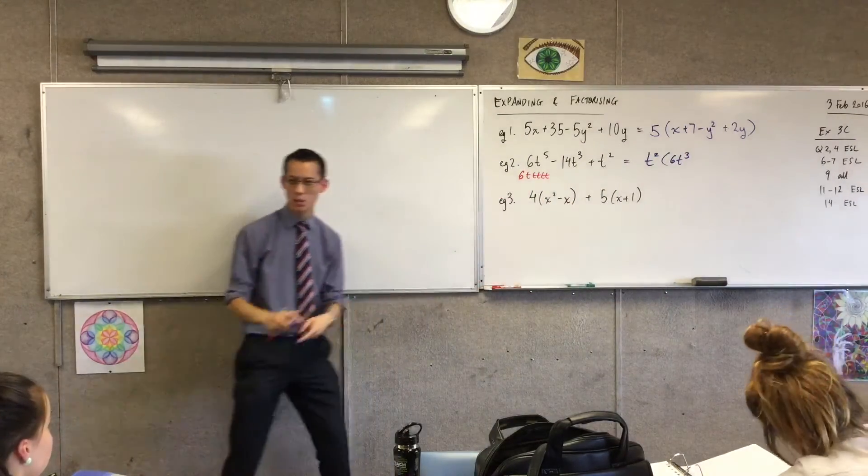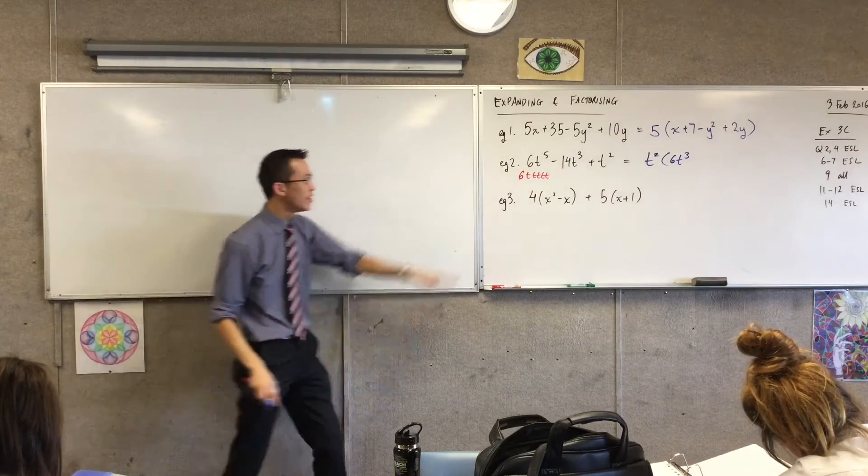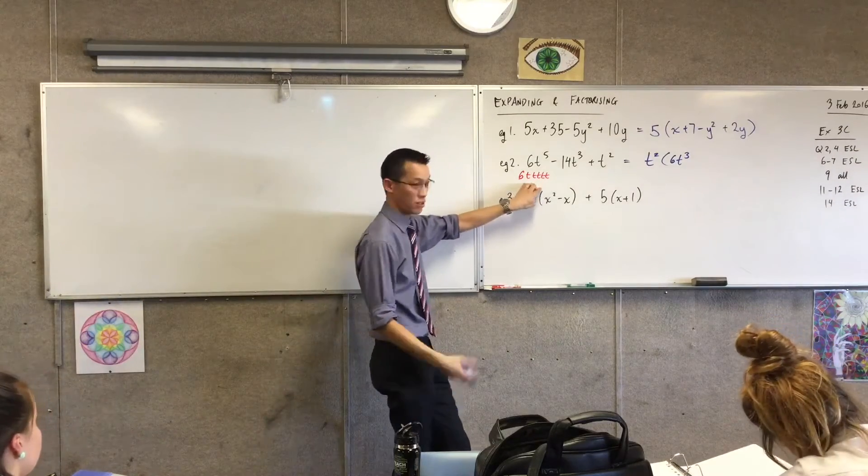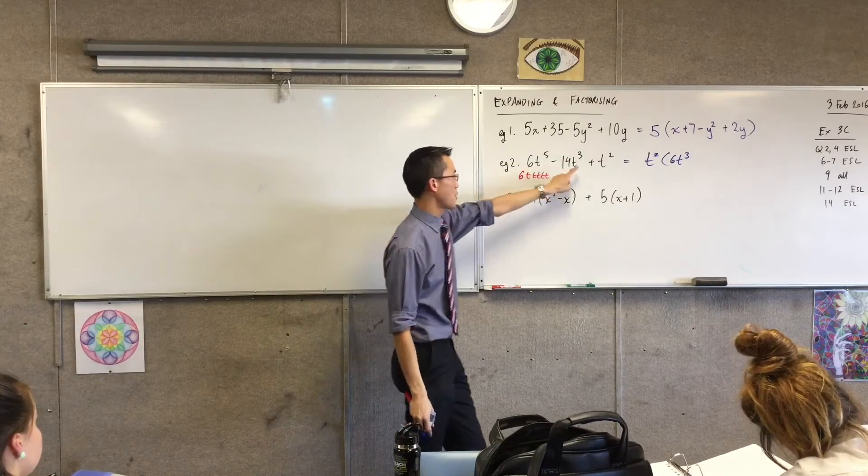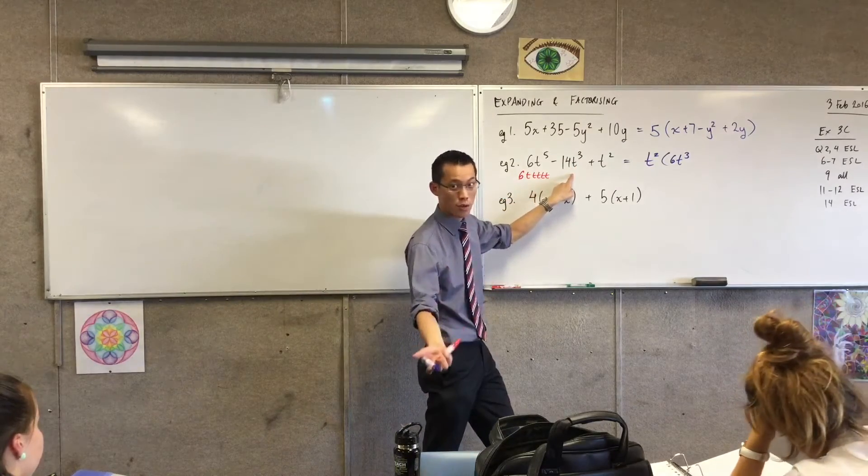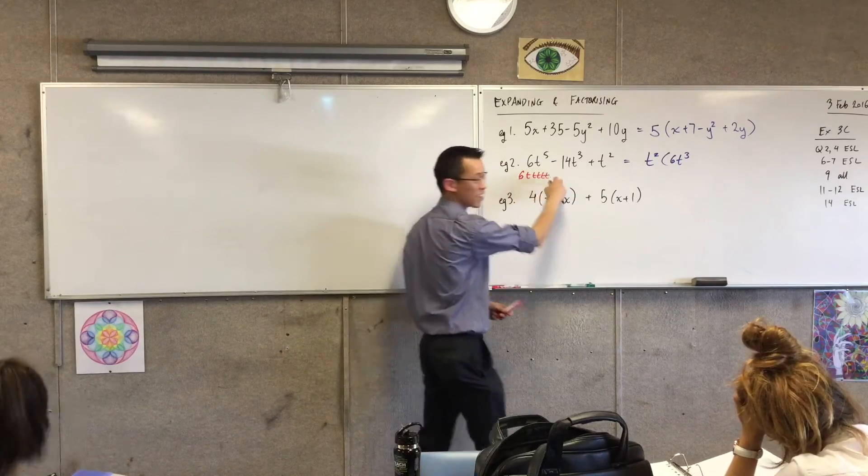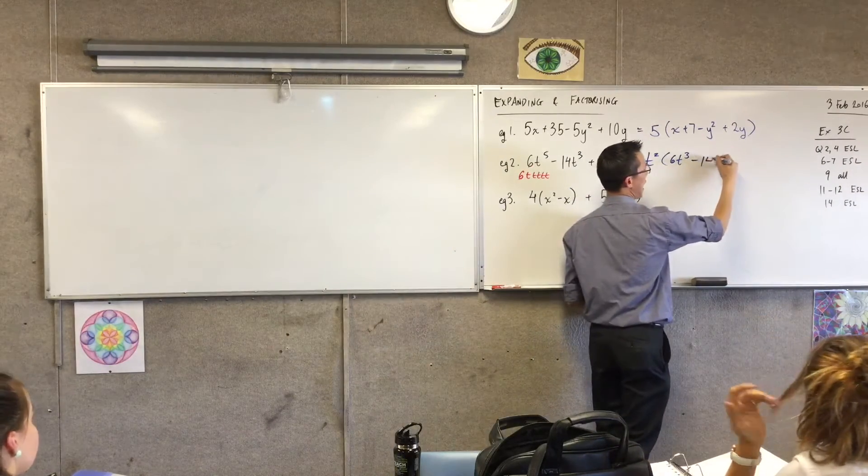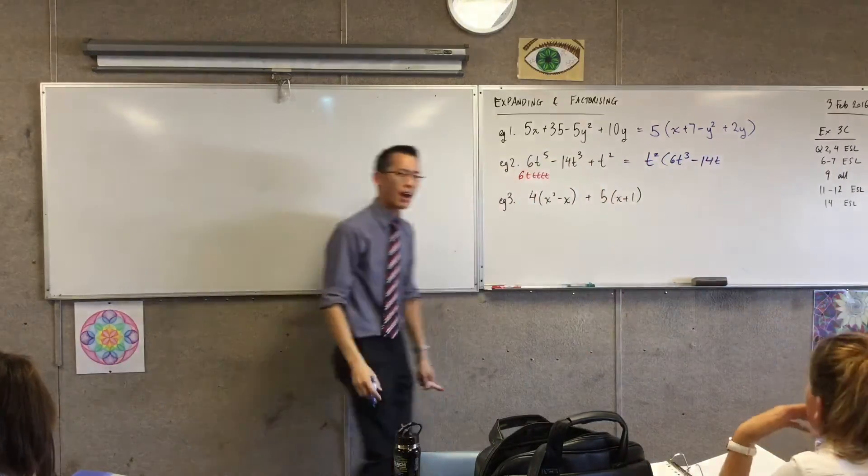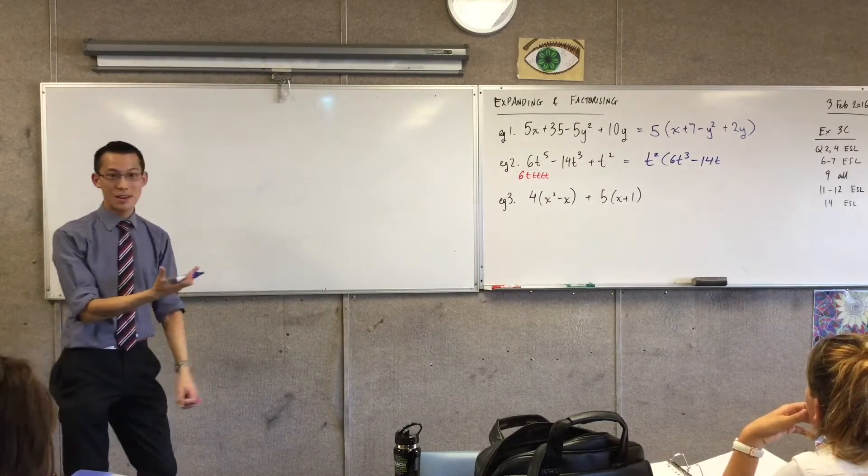This is why the index law of subtract the powers and all that - that's why it works. It's because it's just shorthand for this. There are three of them here, so when you take out two of them you're left with just one of them. Don't forget the minus 14 hangs on for the ride though, because I haven't done anything to factorize that out. And then of course, lastly, what's left?